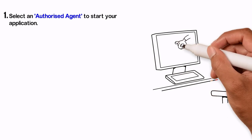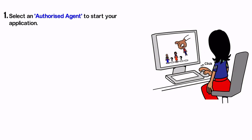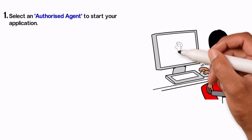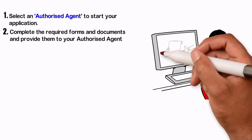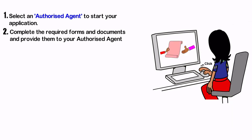To start your journey to second citizenship of Dominica, simply follow the steps below. Select an authorized agent to start your application. You can find a full list of all authorized agents on the program's official website. Complete the required forms and documents and provide them to your authorized agent who will submit them on your behalf.